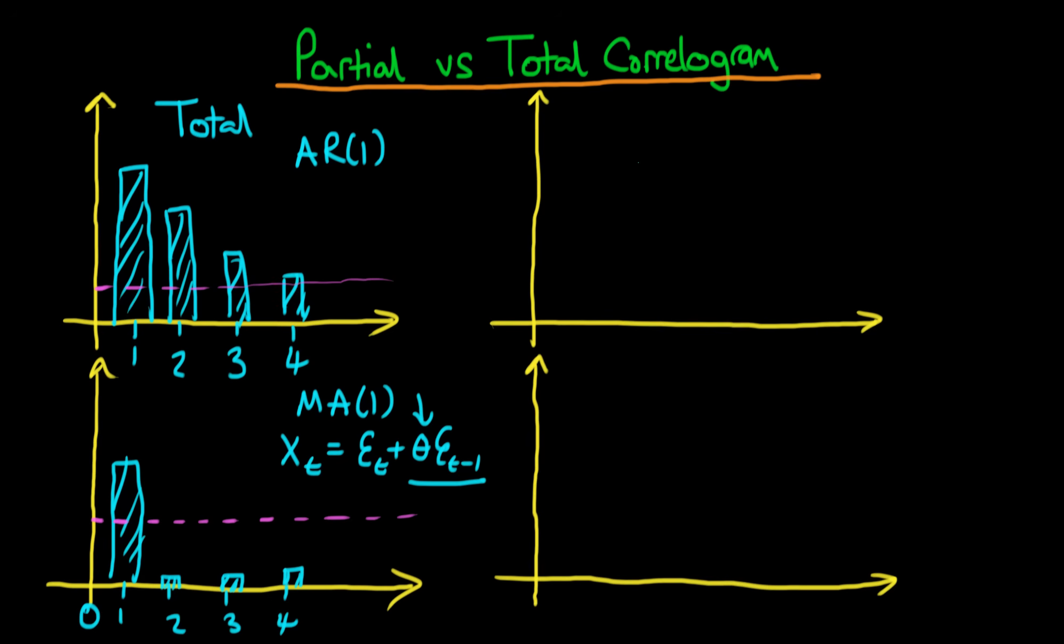Remember why this is for an AR1 process: we've got XT is equal to rho times XT minus 1 plus epsilon T, and another way of writing that is rho squared times XT minus 2 plus rho times epsilon T minus 1 plus epsilon T. So you can see why there is still going to be this correlation between XT and XT minus 2 and the strength of that is going to be given by rho squared and similarly for higher order processes.